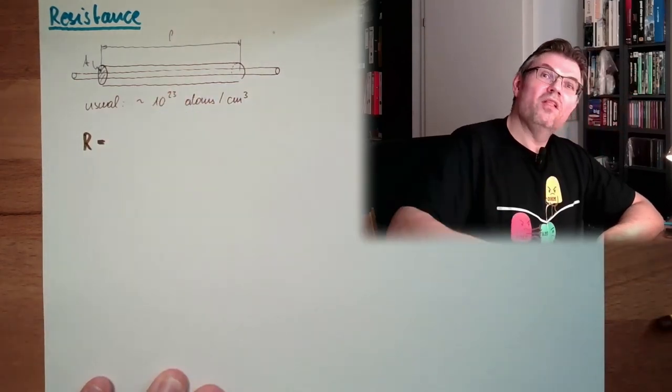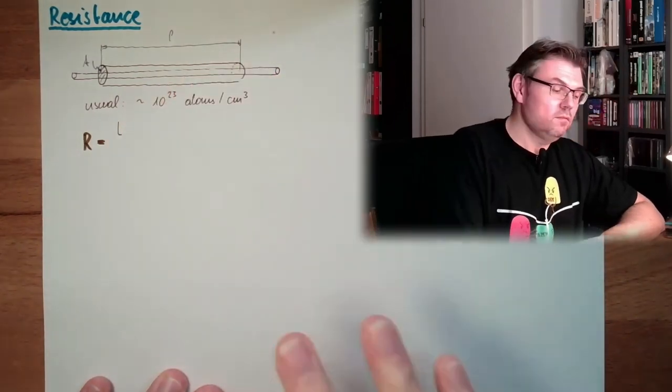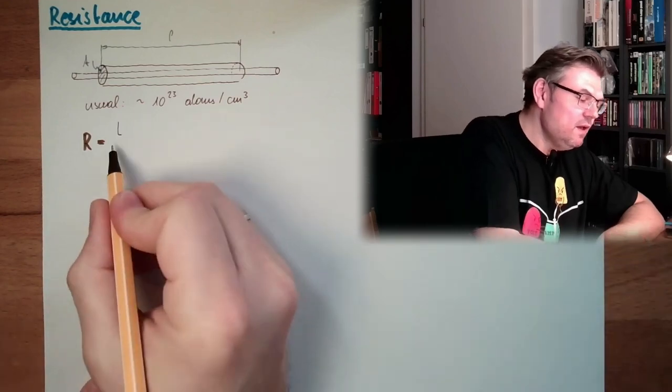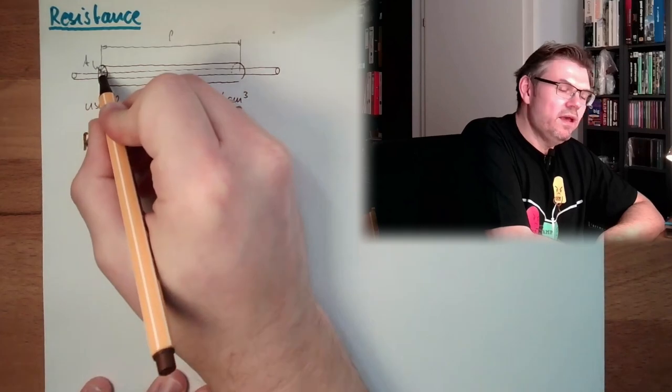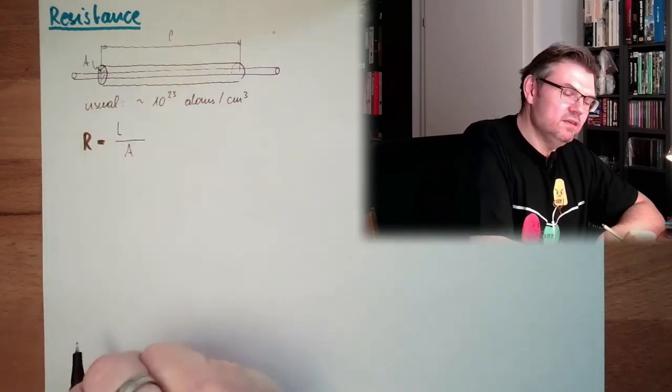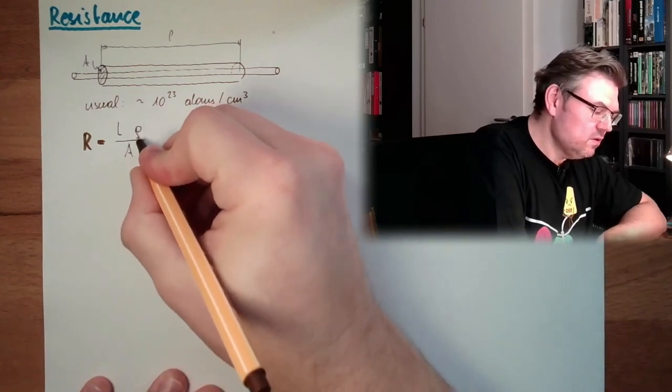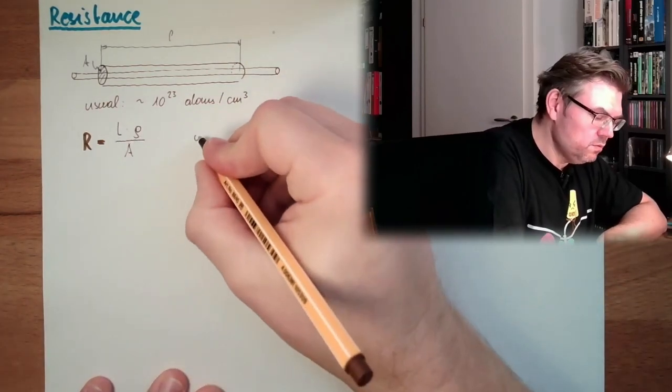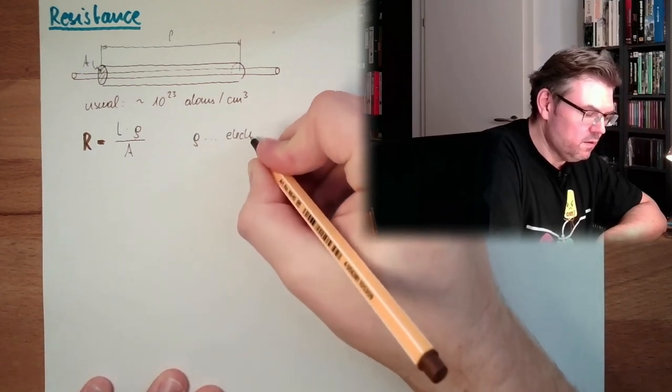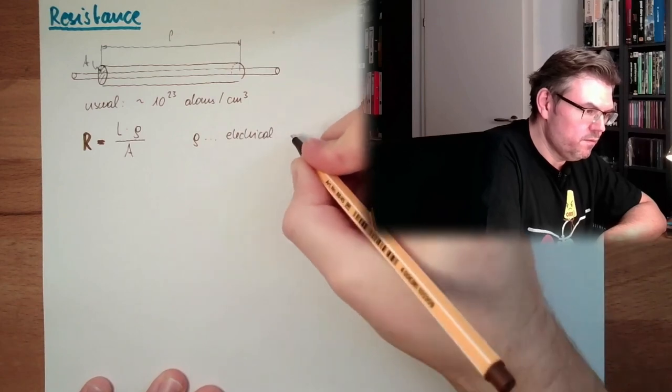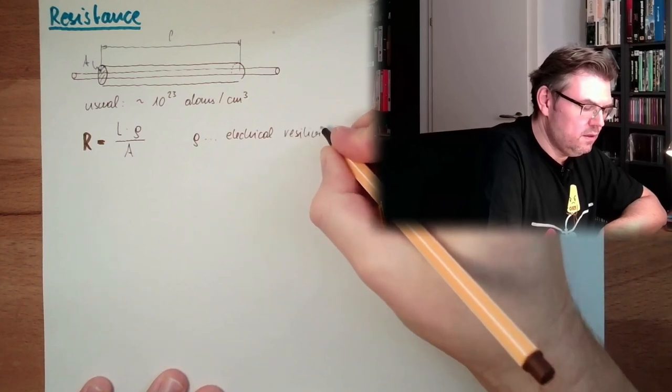We said the longer it is, the worse it is. And we said the bigger the area is, the better it is. And then we have a material constant. And this material constant is called rho. And this rho is called electrical resistivity.